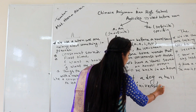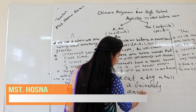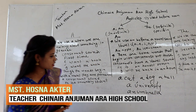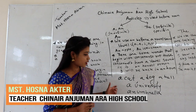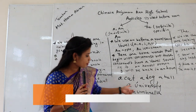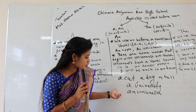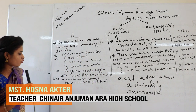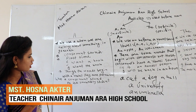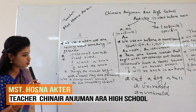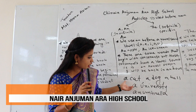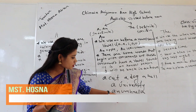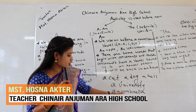But there are some exceptions. For example, 'a university' and 'an umbrella'. Here we use 'a' before the word 'university' but 'an' before the word 'umbrella'. Though both words begin with a vowel letter, 'university' is pronounced like a consonant sound, so we use 'a' instead of 'an' before it. But 'umbrella' begins with a vowel sound, so we use 'an' before it.